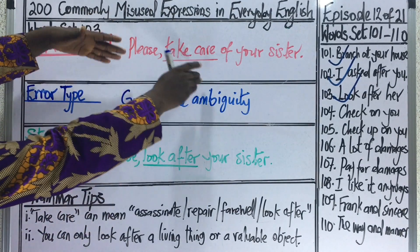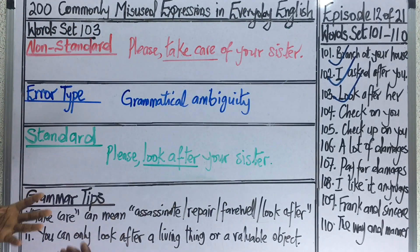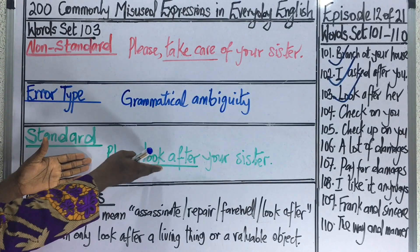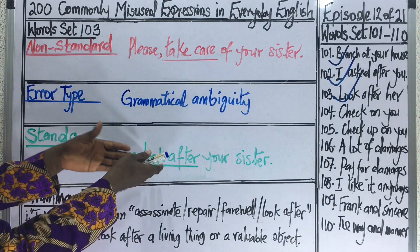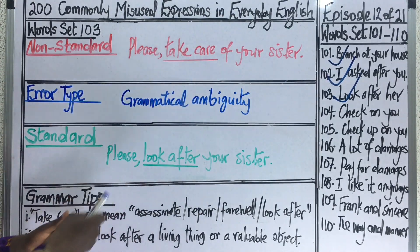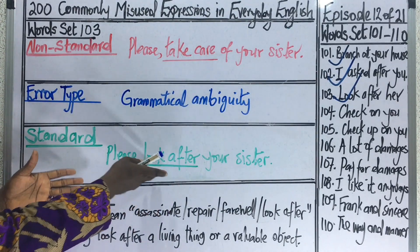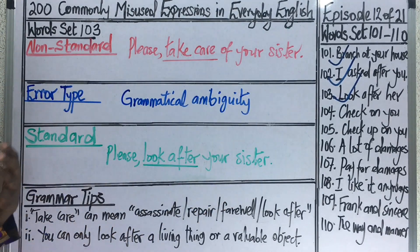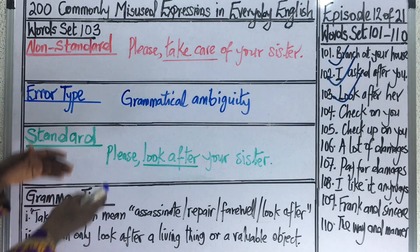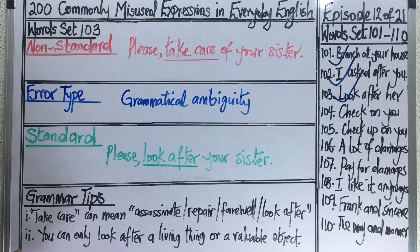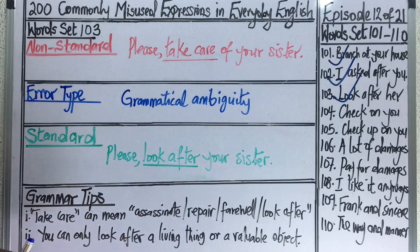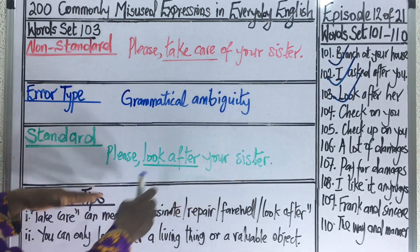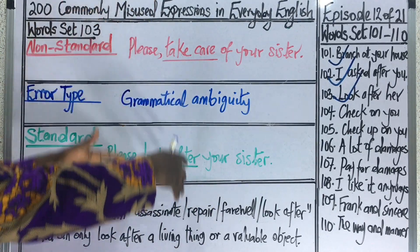Instead of saying please take care of your sister, you could say please look after your sister. When we hear 'please look after your sister,' we are sure you are asking the person to protect his or her sister. So 'look after' is the better choice to use in this context.